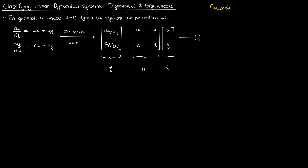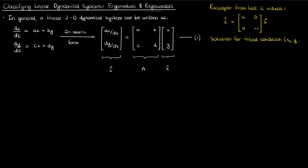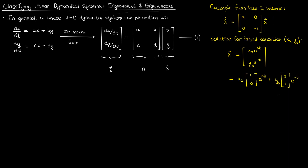Remember from the last couple of videos that the example we solved was a special case of this 2D linear dynamical system. The solution for initial condition (x0, y0) can be broken up into a linear combination of separate solutions: x0 times (1, 0) times e^(at) plus y0 times (0, 1) times e^(-t). I'll call this equation 2.